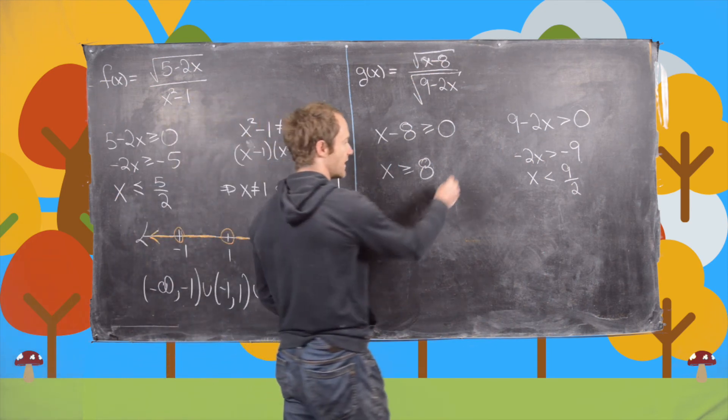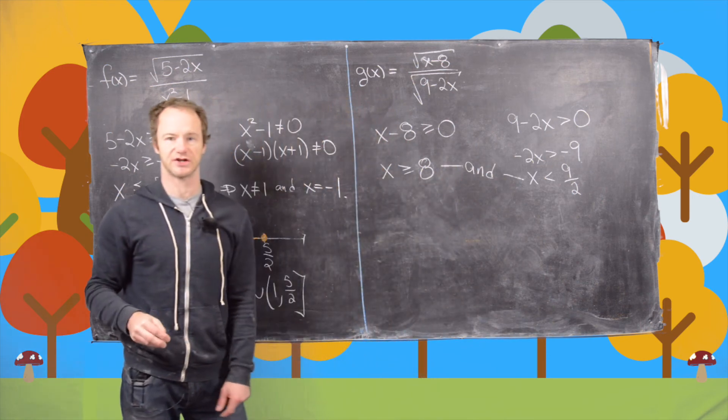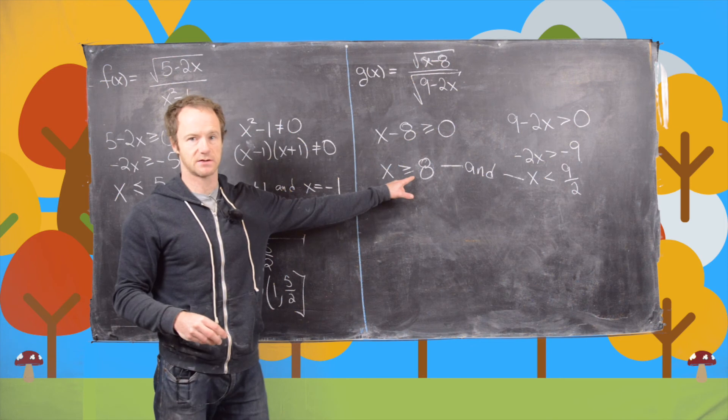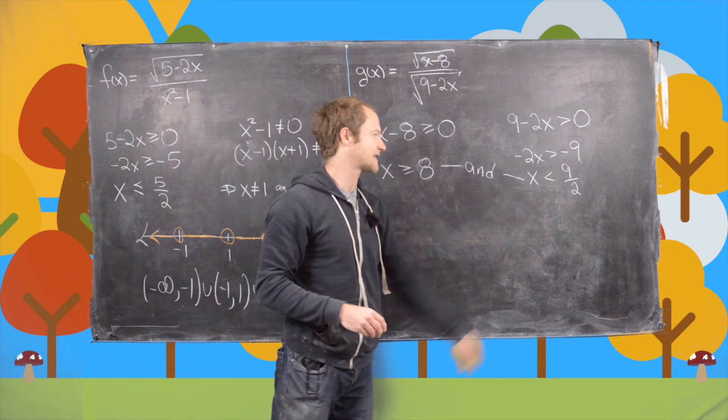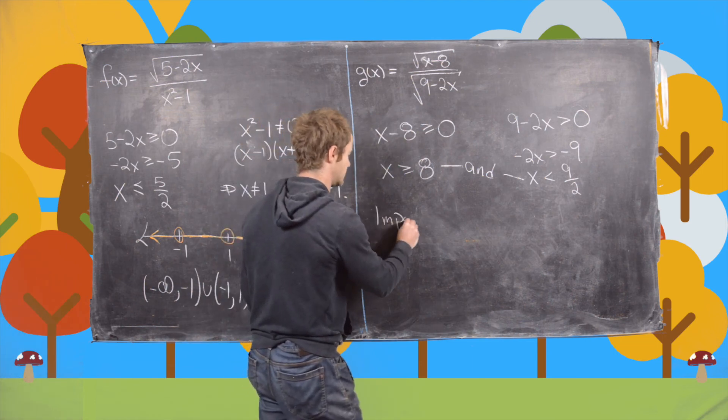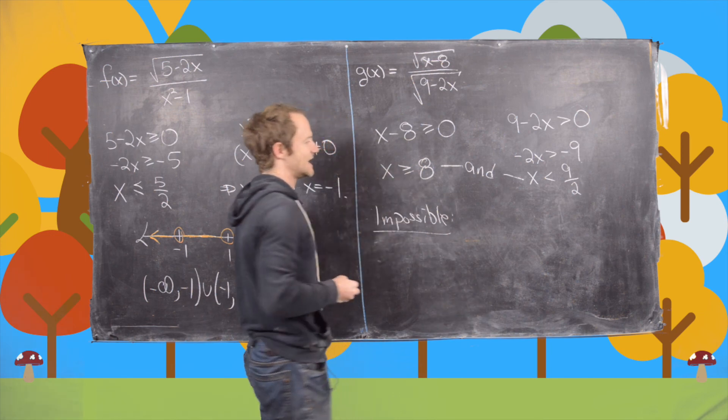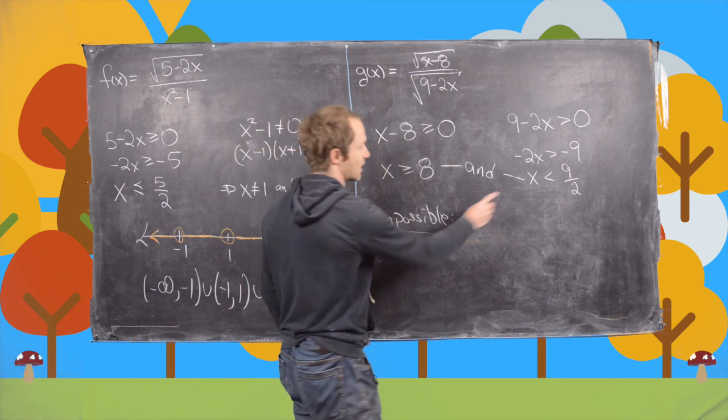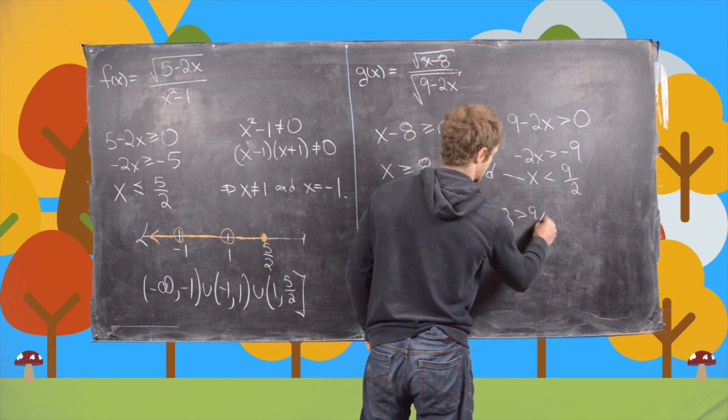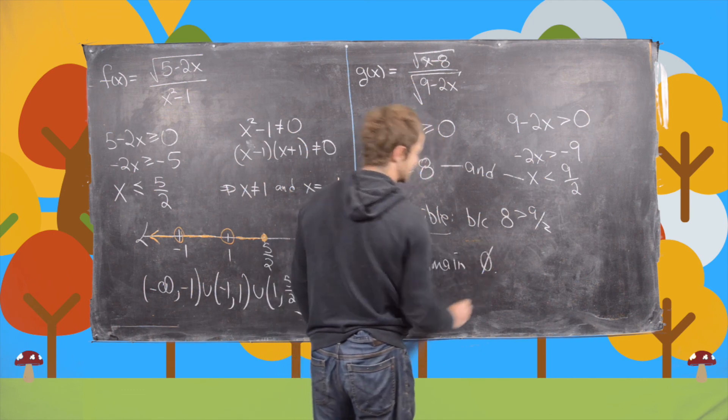Recall that for problems like this, you have an and conjunction between these two conditions. So what we need is x to be bigger than 8 and x to be less than 9 over 2. But notice that's impossible because 8 is bigger than 9 over 2.